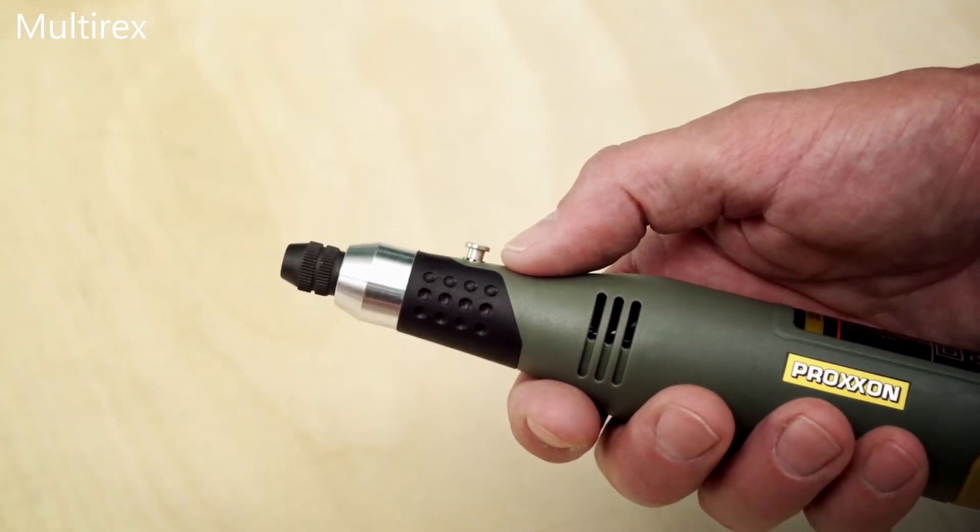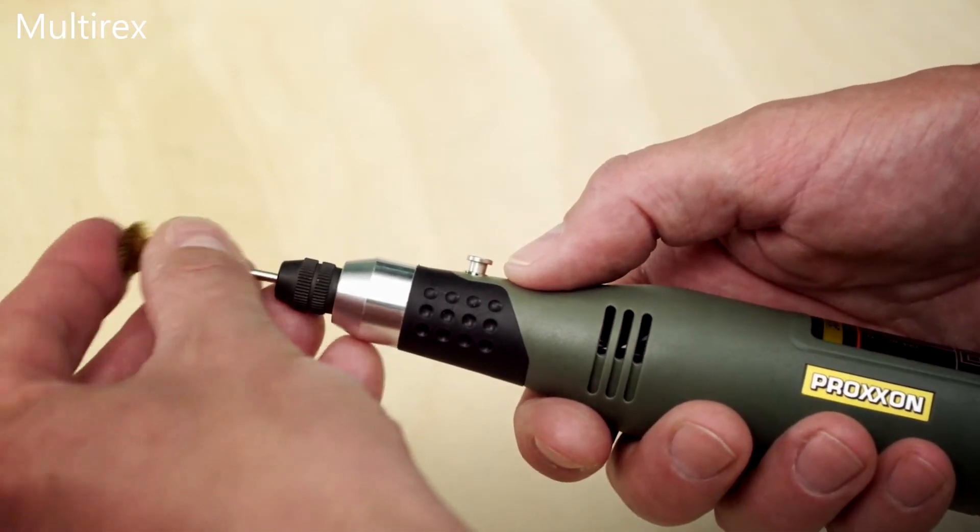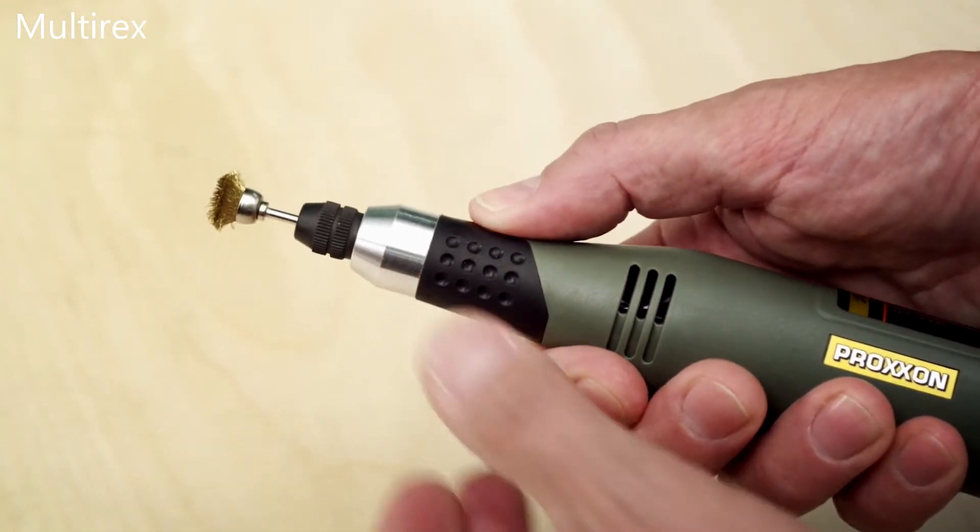The precision ball bearing mounted spindle can be locked at the push of the button, making it easy to exchange accessories.